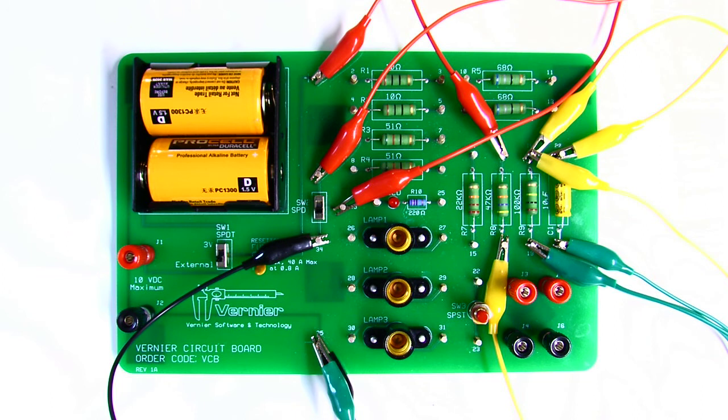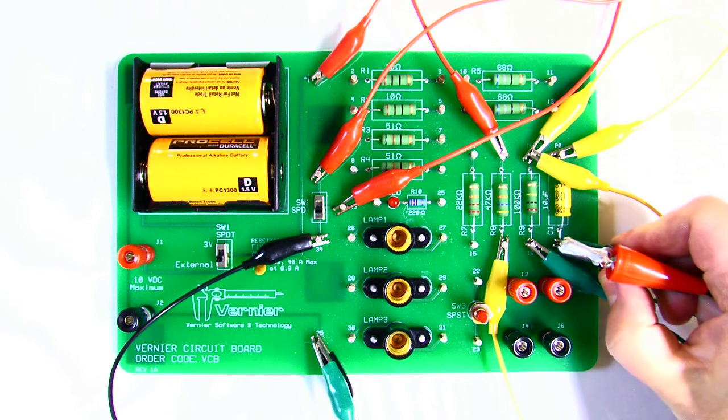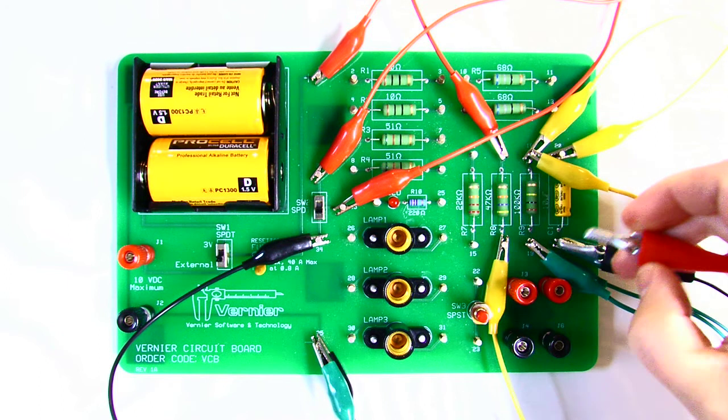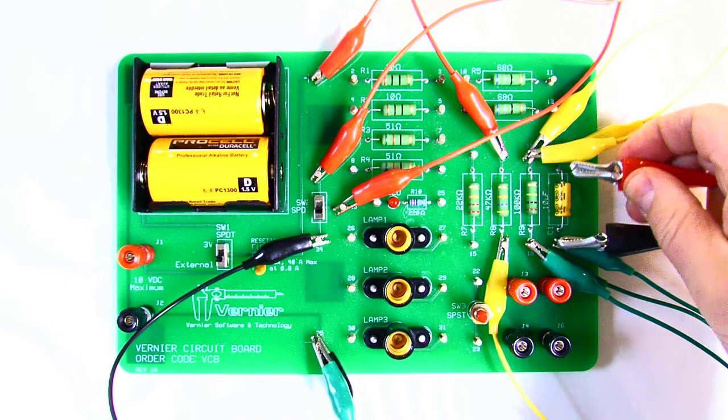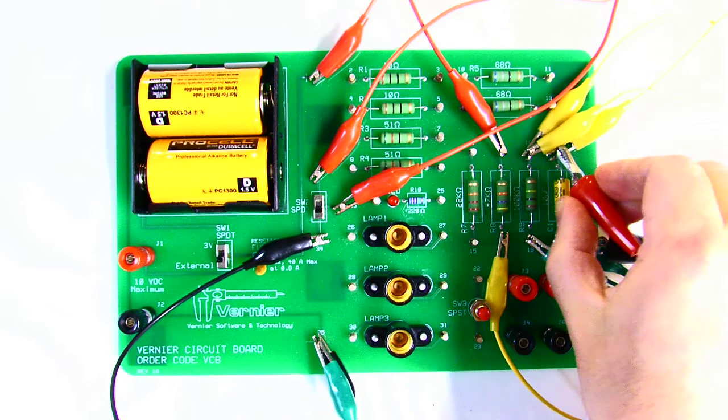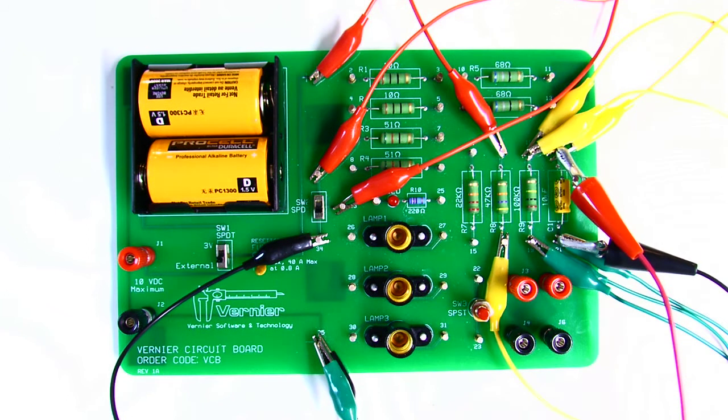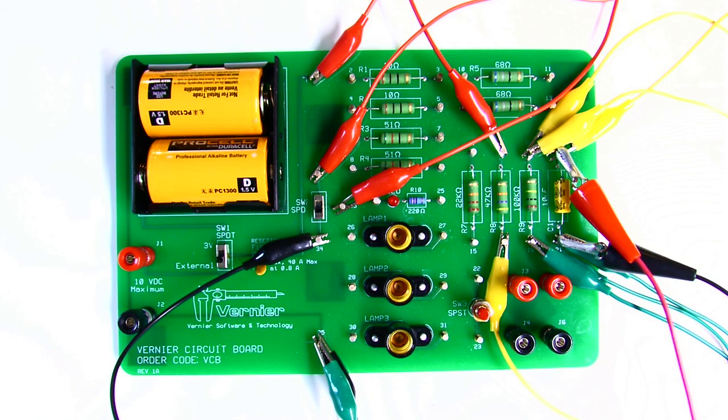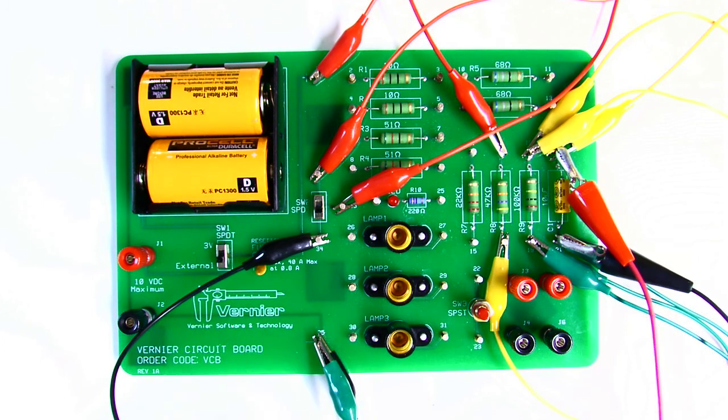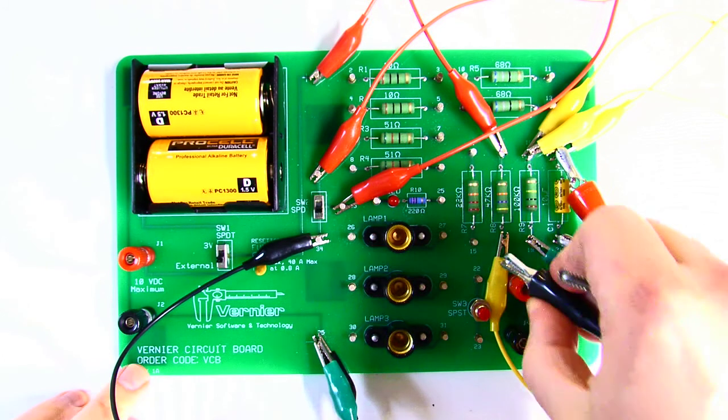Now to monitor the voltages, I have two voltage probes plugged into my LabPro interface. I'm going to connect one of them to monitor the voltage across the capacitor and 100 kiloohm resistor. I'll wire the other one to monitor the voltage across the 47 kiloohm resistor.